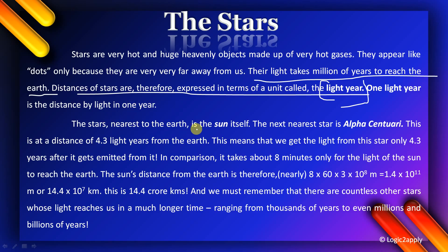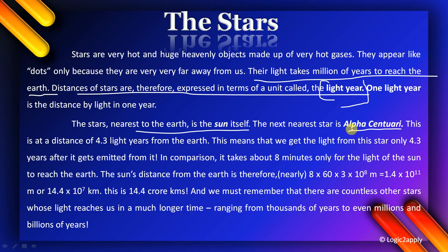The star nearest to the Earth is the Sun itself. The next nearest star is Alpha Centauri. These two lines are very, very important because the most common questions come from them. Alpha Centauri is at a distance of 4.3 light years from the Earth.